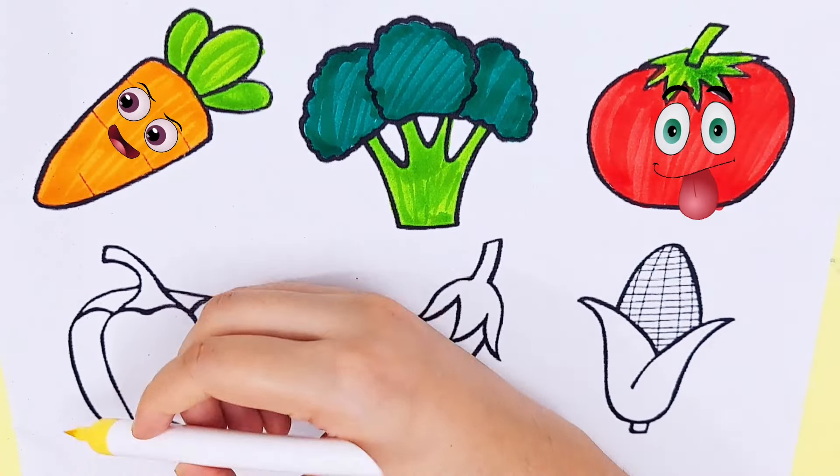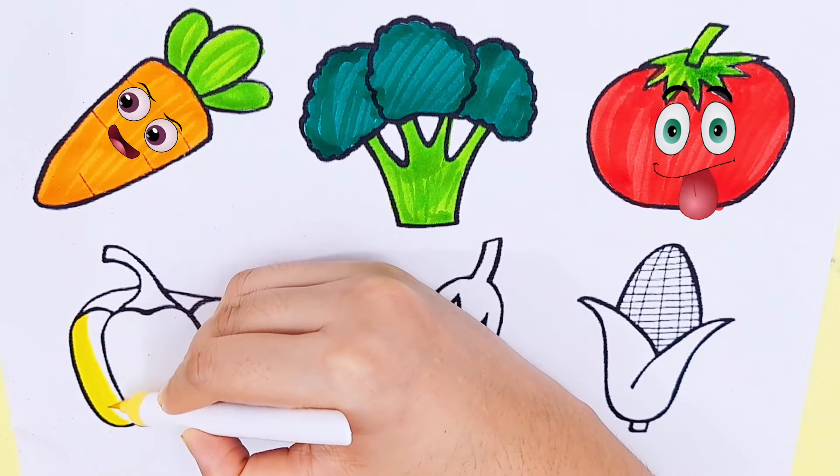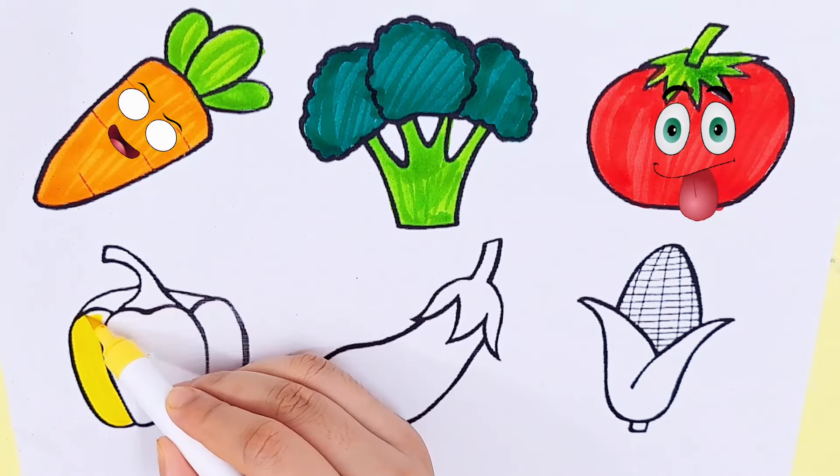Yellow color. Bell pepper. Bell pepper is yellow color.